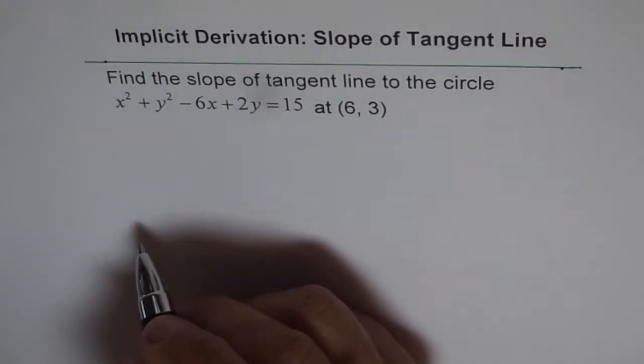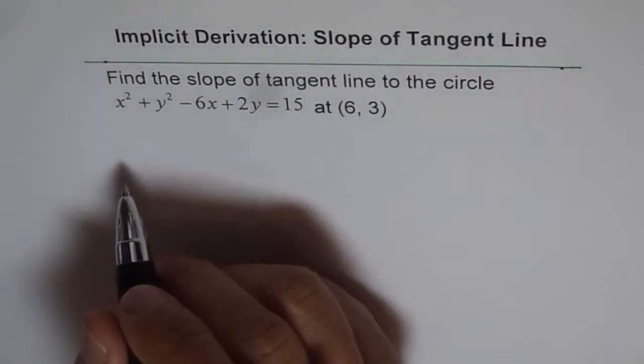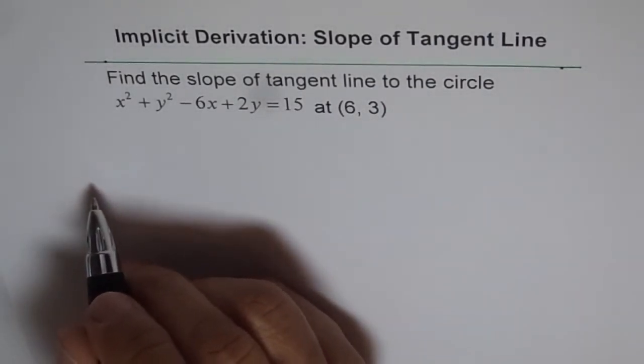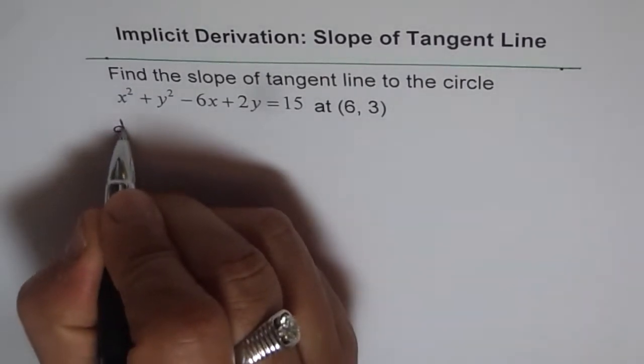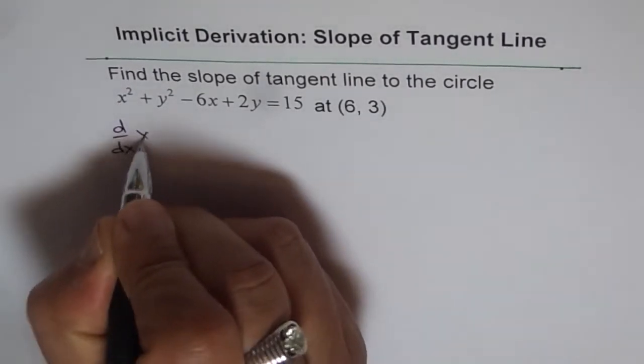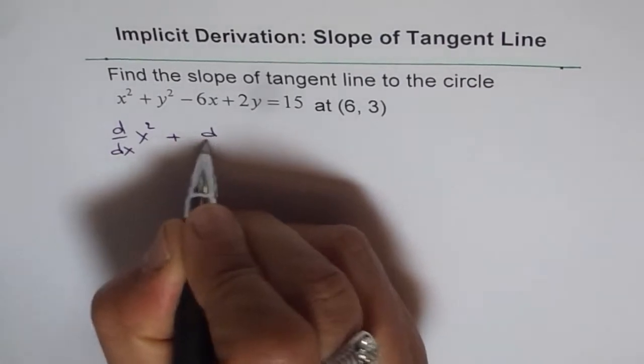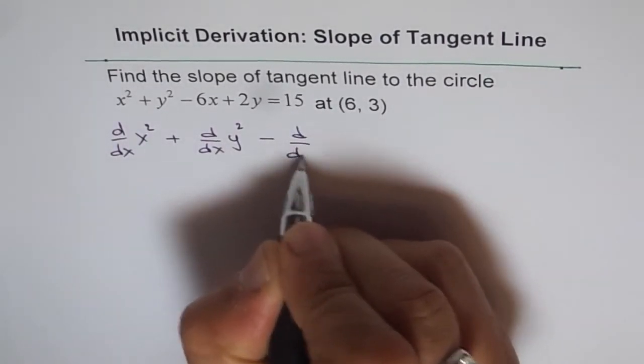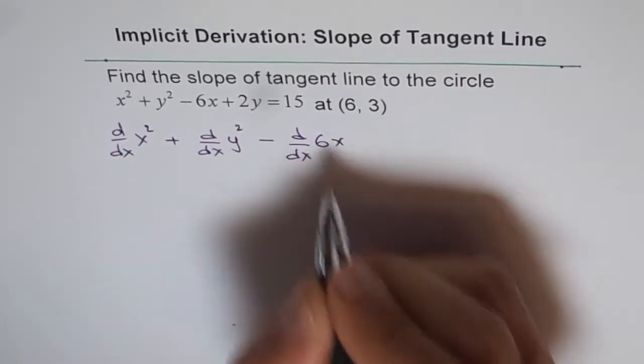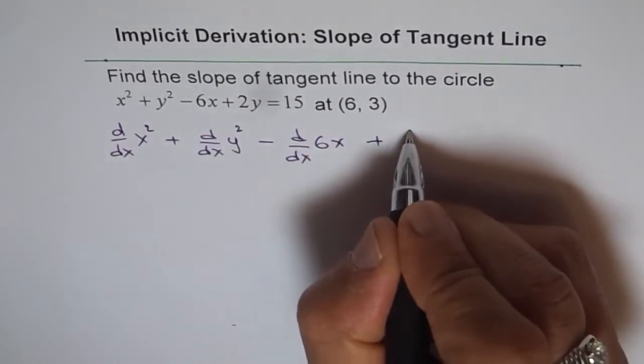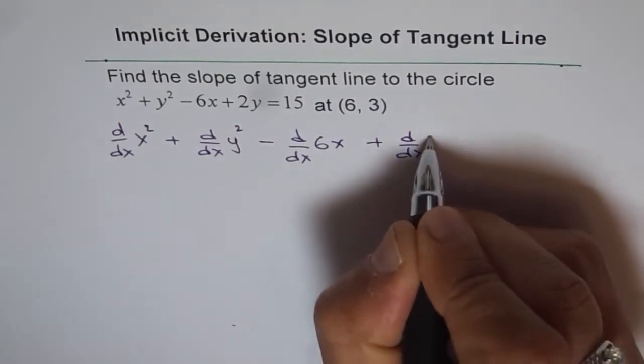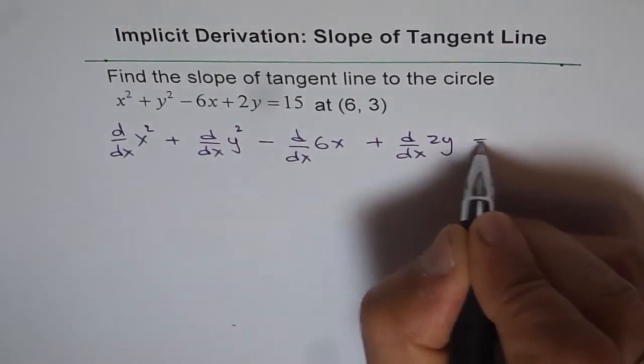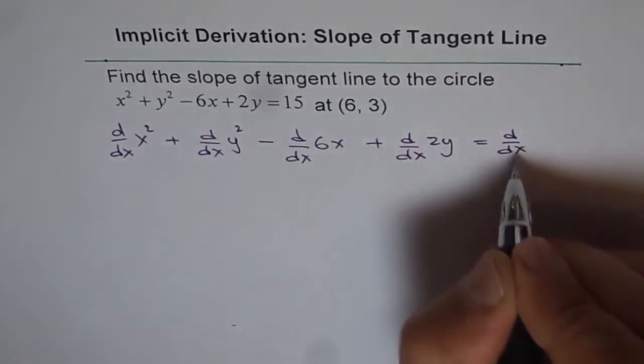Let's differentiate both sides with respect to x and see what we get. We get d over dx of x square plus d dx of y square minus d dx of 6x plus d dx of 2y equals d dx of 15.